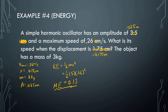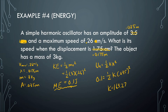Now that I know the total energy, I can find the spring constant. The elastic potential energy equals one-half kx squared, so when it's at its amplitude: total energy 0.1 equals one-half times k times the amplitude (0.035) squared. Solving for k, I get approximately 163.27 newtons per meter.